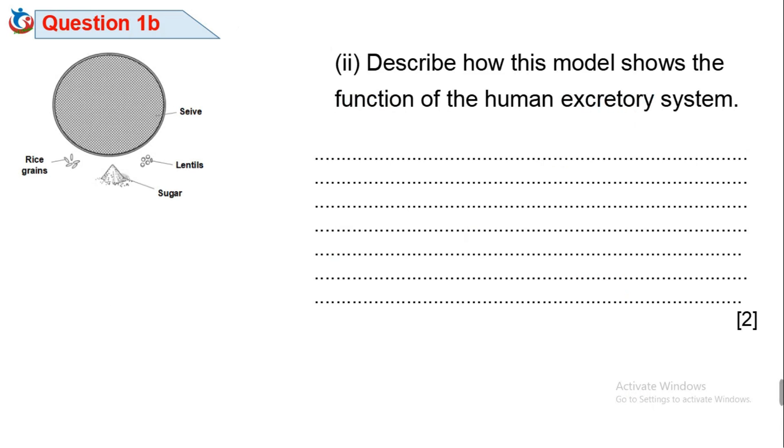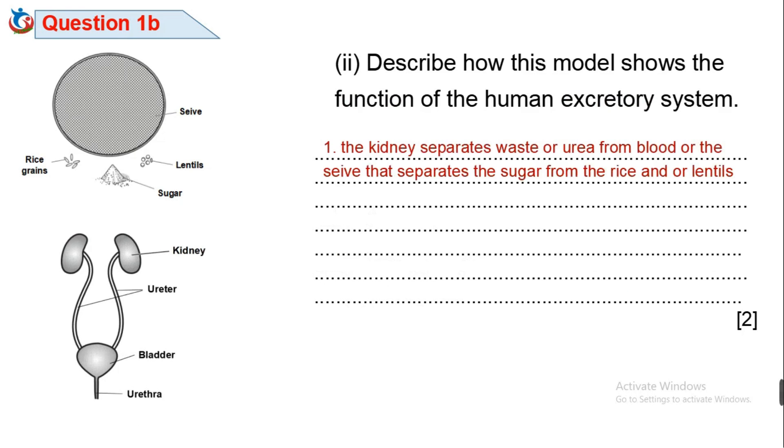Question 1B2. Describe how this model shows the function of the human excretory system. We've discussed them already but as a summary. 1. The kidney separates waste or urea from blood. Just as the sieve separates the sugar from the rice and lentils.